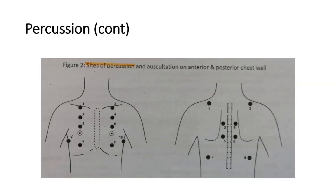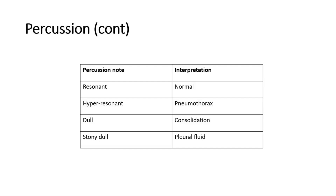We percuss at 10 sites on the anterior chest wall, including the sides of the chest, then move to 8 points on the posterior chest wall. The normal percussion note is resonant, because there is air in the lungs. However, if it is hyper-resonant, it suggests pneumothorax. If the note is dull, it suggests consolidation of the lungs. A stony dull note suggests pleural effusion, where there is pleural fluid present.